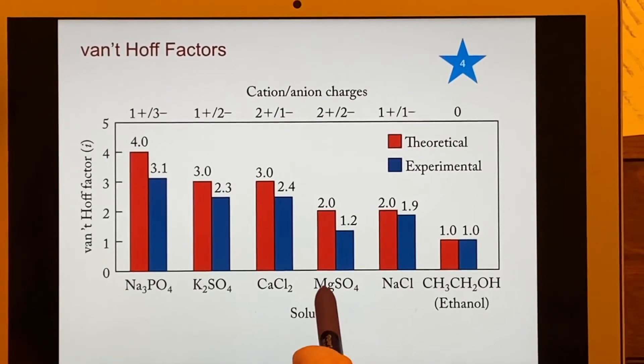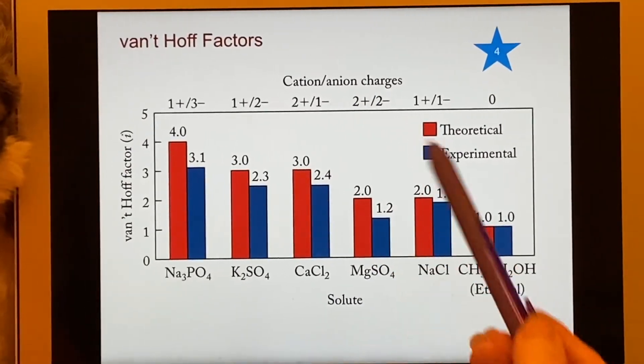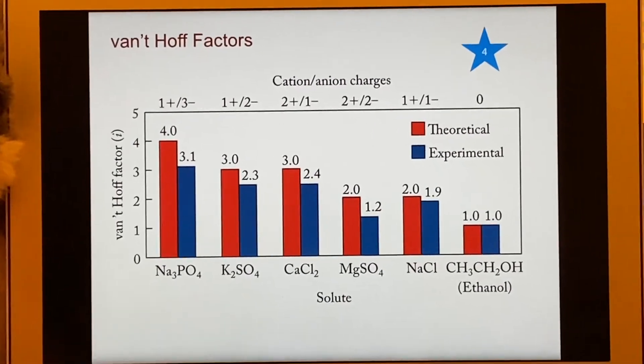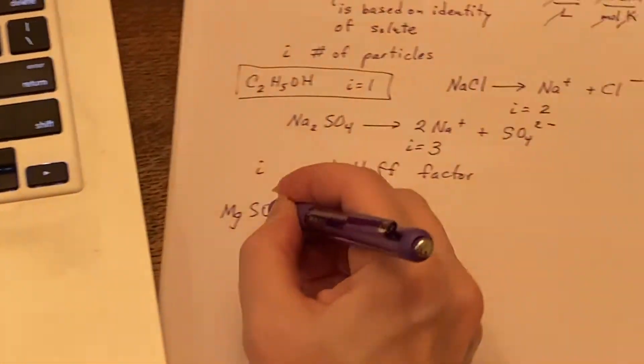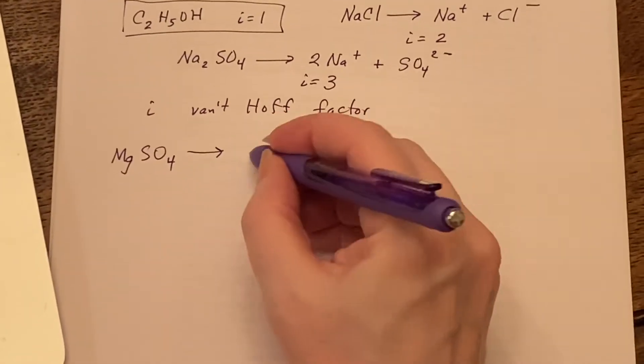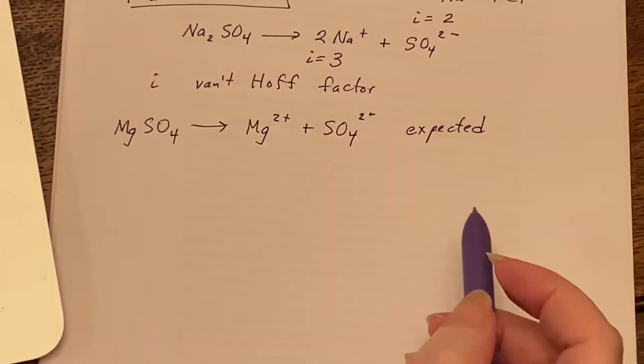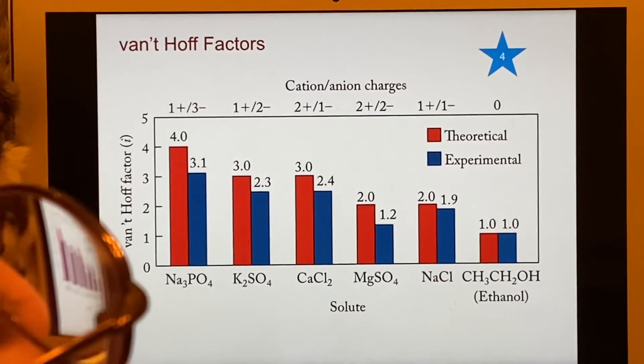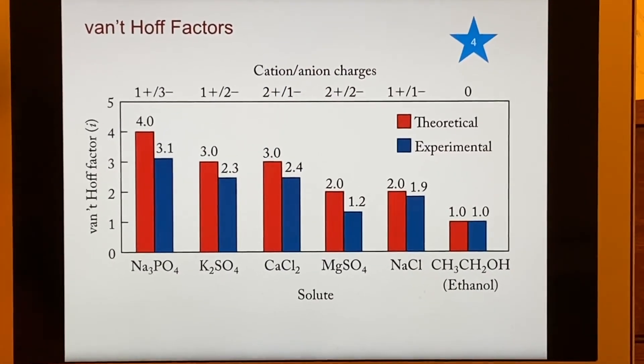What happens if we decide to dissolve something that would form plus two and minus two ions? Still, I would expect that magnesium sulfate should fall apart into two particles. This is what I expect, but it's more than one. It doesn't just stay together, but it doesn't come all the way apart. Why?